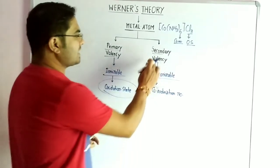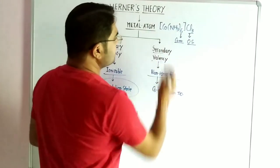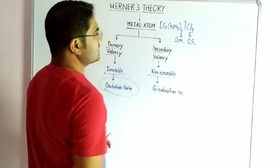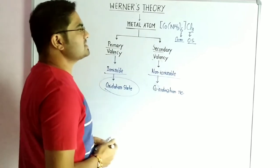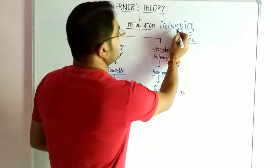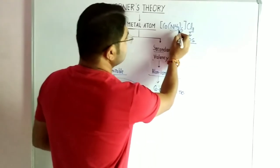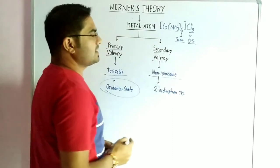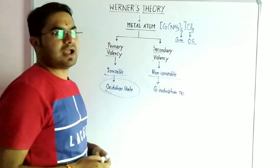Secondary valency totally gives the coordination number. Coordination number means the number of species which are directly attached to the central metal atom.